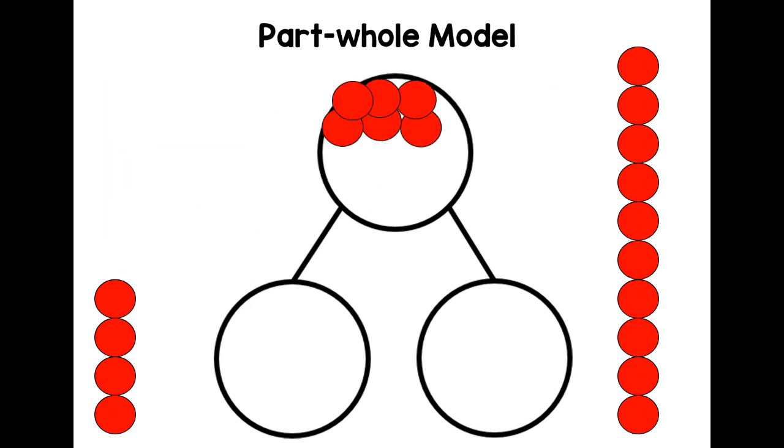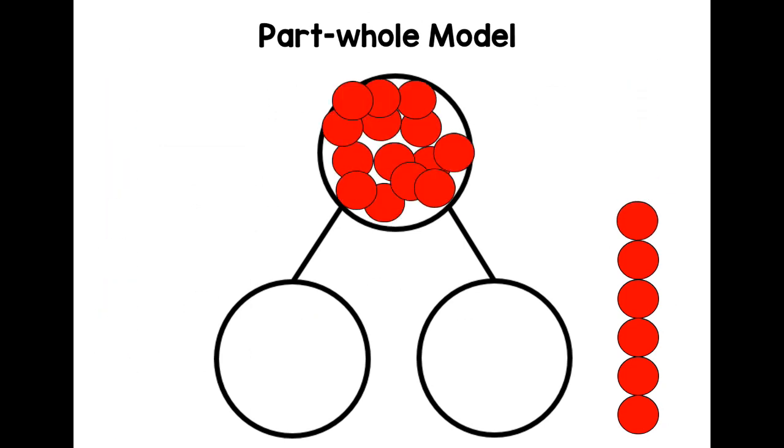Let's do our part, part, whole. So we need sixteen in the top. I'm making them jump in very quickly. Sixteen. Now remember, you can have a go at part, part, whole on your own at home. You can draw your part, part, whole model and then use counters. So put sixteen in the top and then move the counters, all of them, out of the top circle, out of the hole and into the parts.